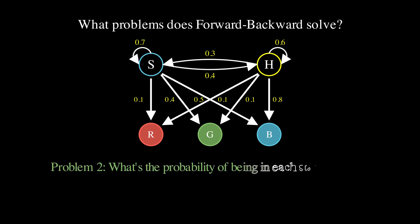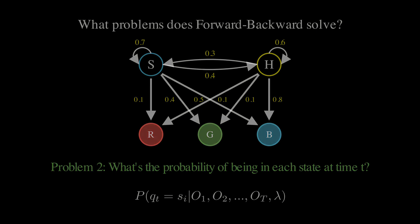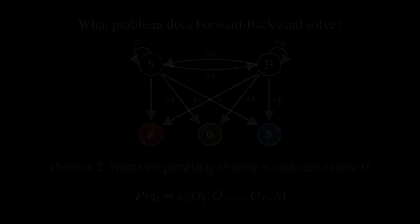But what if we wanted to know something more nuanced, like what's the probability that the person was sad on day two, given all three days of hat observations? This is where the forward-backward algorithm comes in, and it's actually two algorithms working together to give us these probabilities.